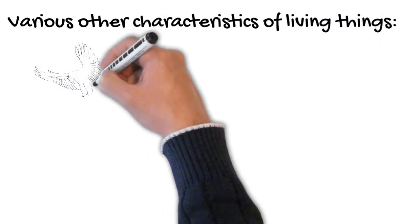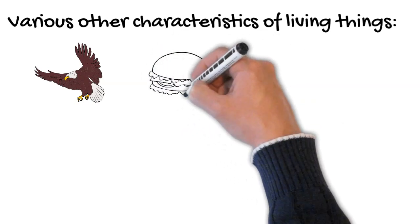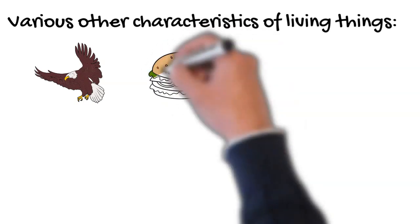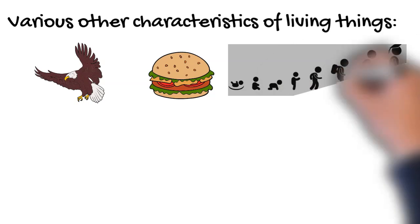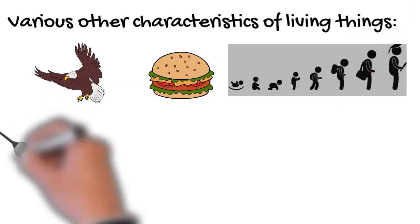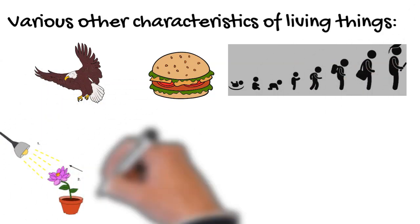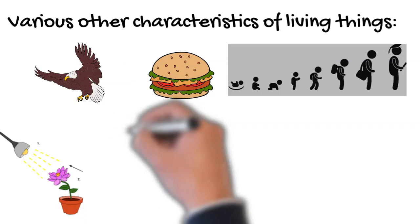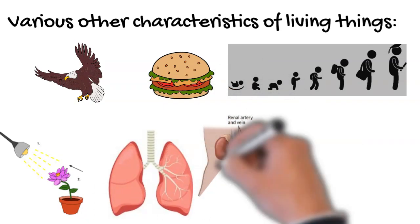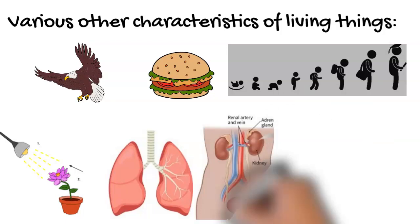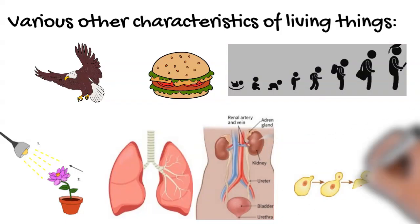Other characteristics of living things are: they can move by themselves, they need food, air, and water, they can grow, they can respond to stimuli, they can undergo respiration, they can remove waste, and they can undergo reproduction.